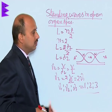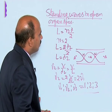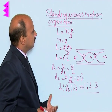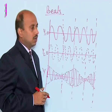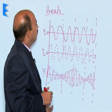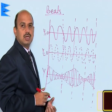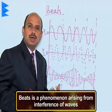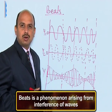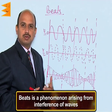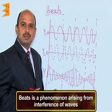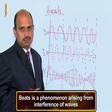So, for n number of frequencies, we get nu 1 : nu 2 : nu 3 equal to 1 : 2 : 3. This is about the standing waves in open organ pipes. Now, beats — this is also an application of the superimposition principle of waves.